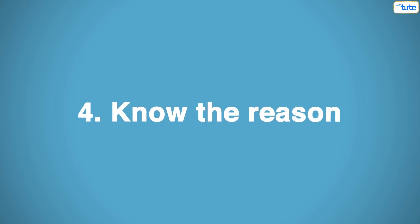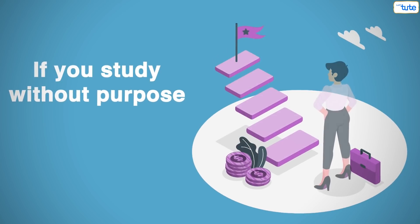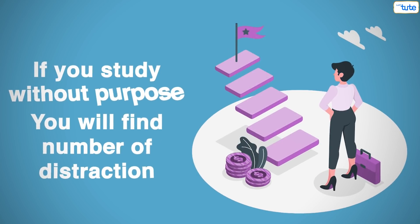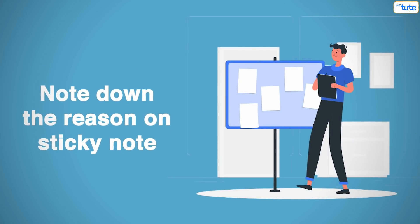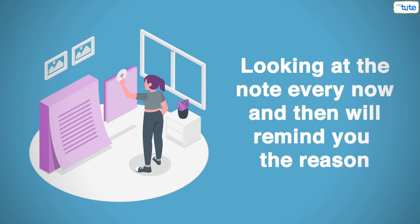Tip number four: know the reason. This means, if you're studying without any purpose, then you'll find number of distractions. But if you have a reason for studying, then no one can stop you. So note down the reason on a sticky note and stick it near your study table. Because looking at that note every now and then will give you the reason for studying.